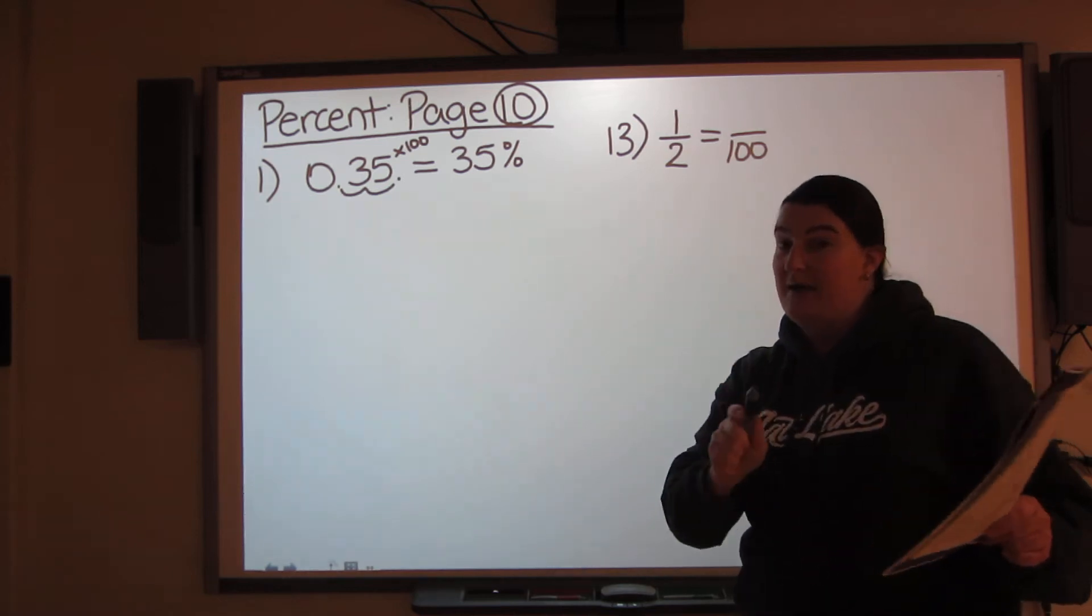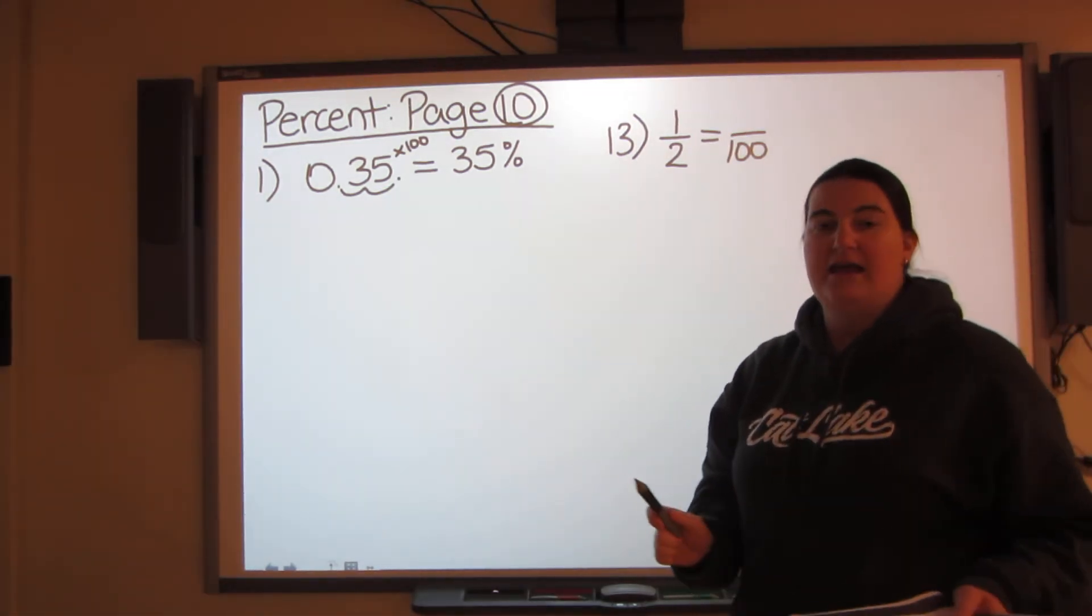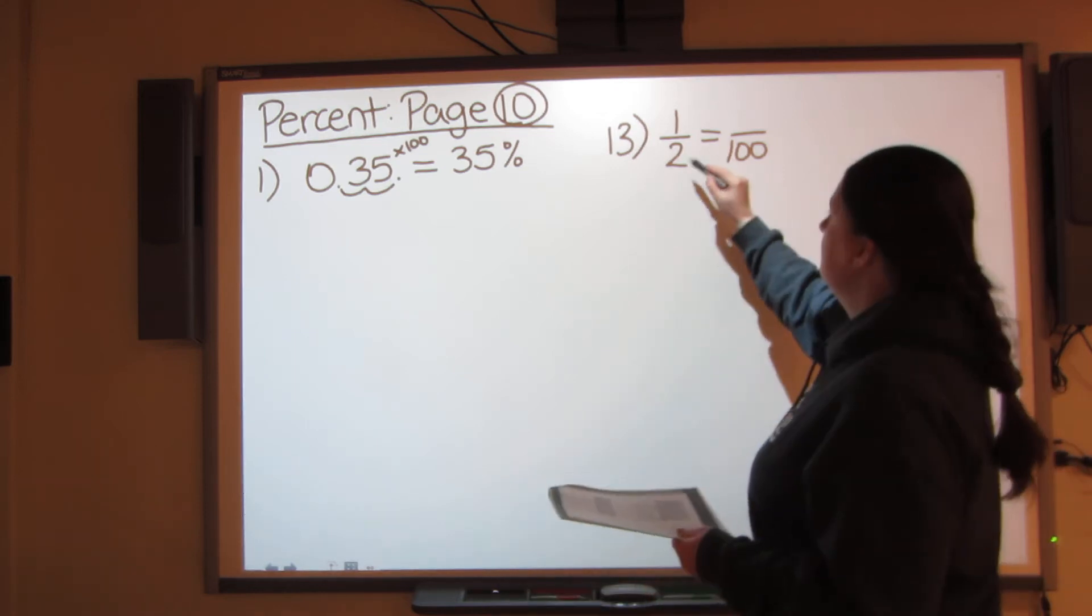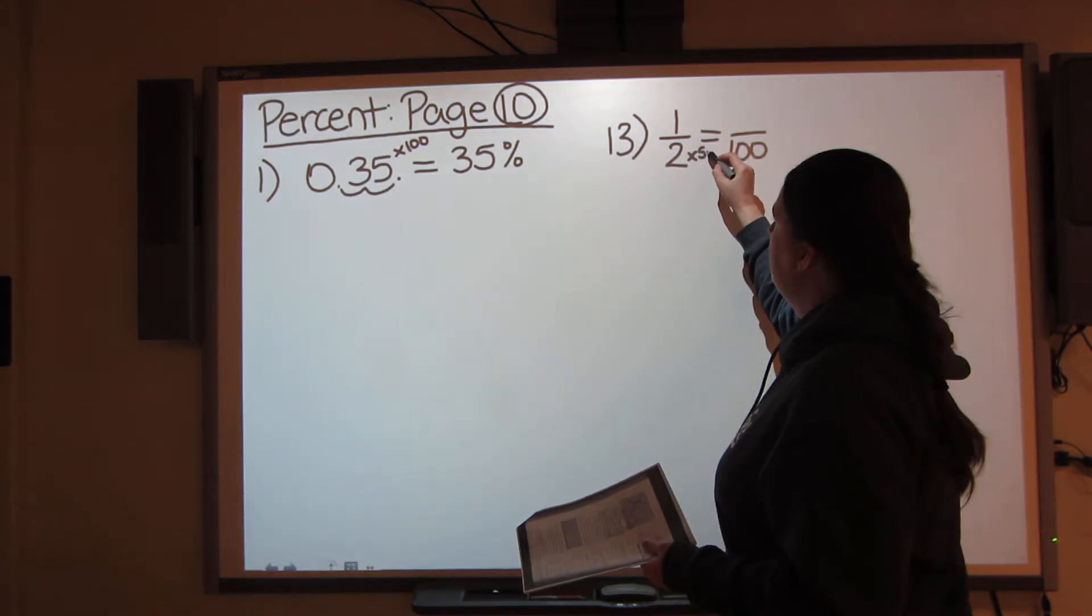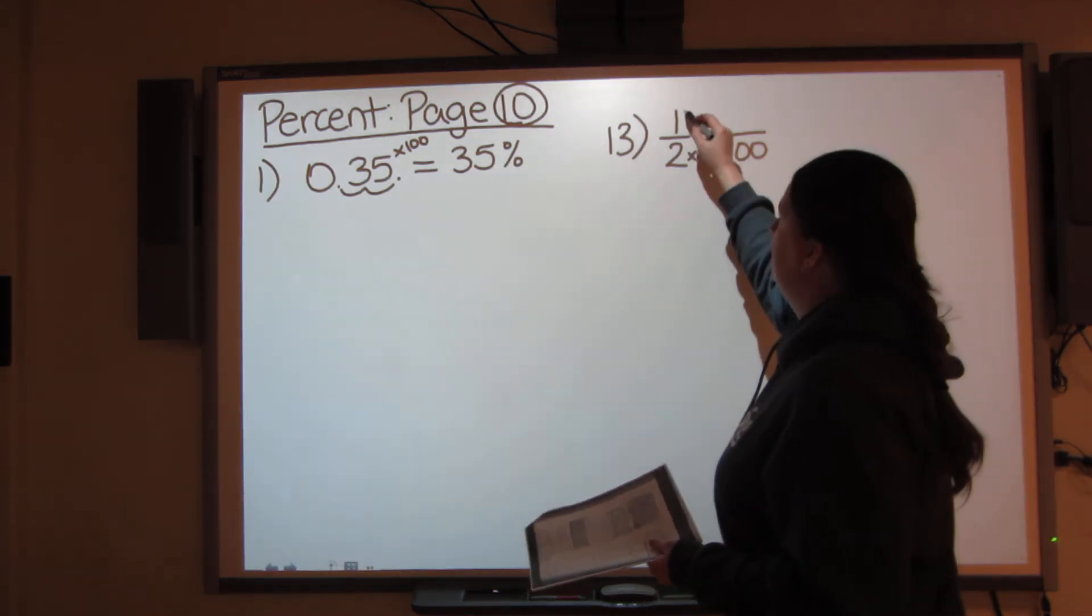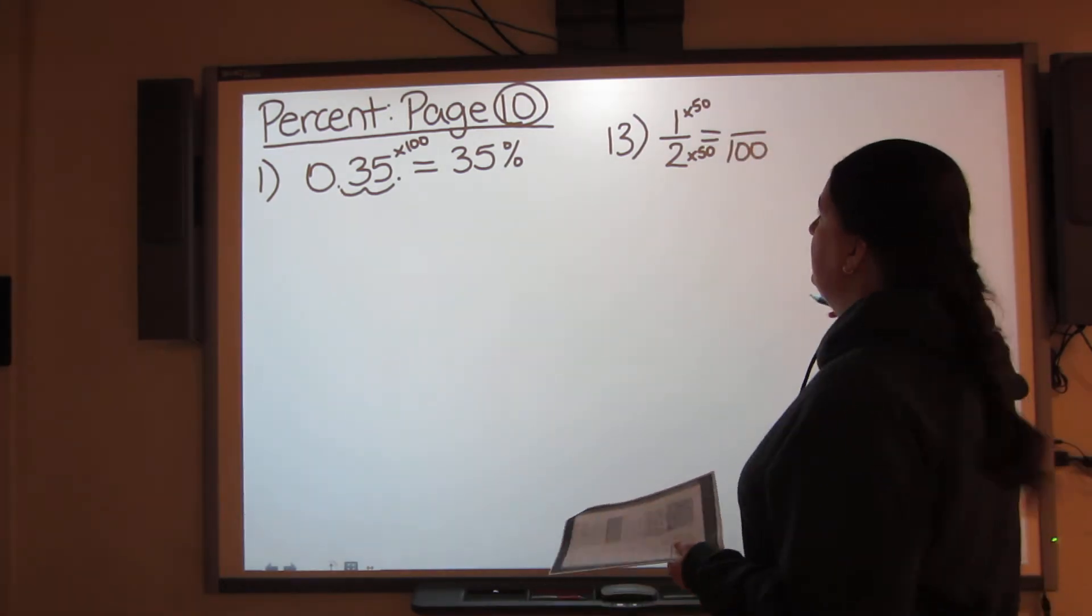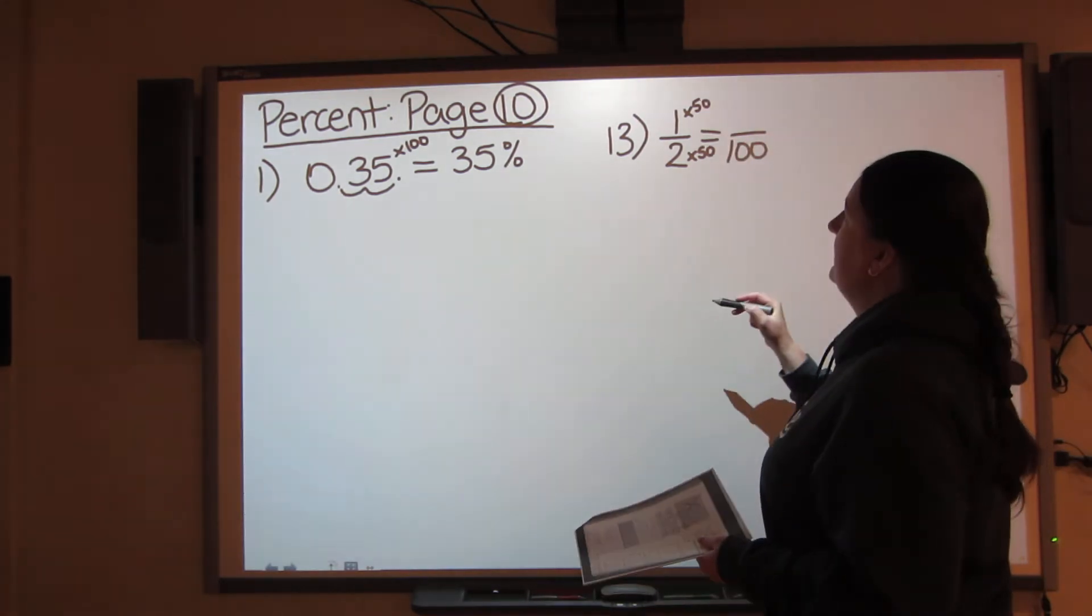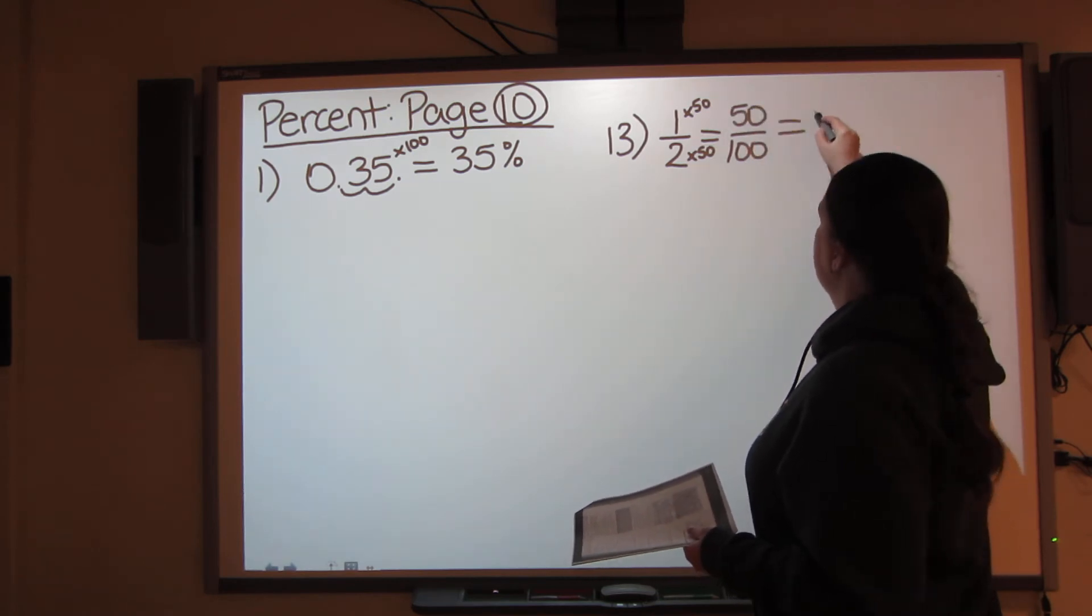So using those math facts that we learned, the 100 math facts that are going to come in handy all the time, 2 times something is 100. Well, those 100 math facts, I know that 2 times 50 is 100. Whatever I do to the bottom, I have to do to the top. 2 times 50 is 100. 1 times 50 is 50. So that's 50 percent.